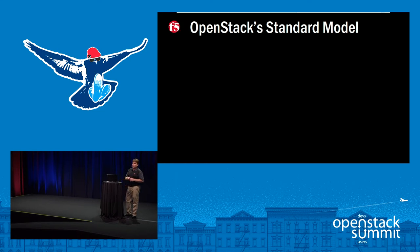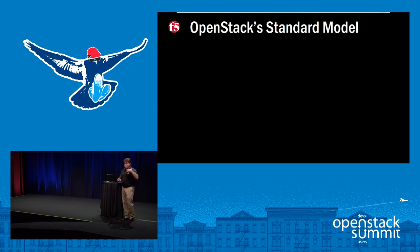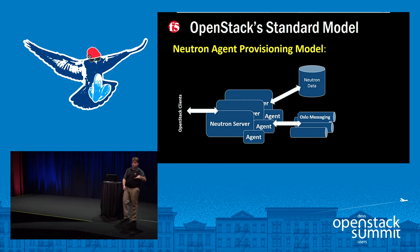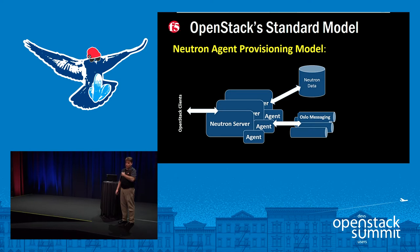If you look at physics, why did the standard model allow physics to continue forward? Because they could build on the theories, they could build on the pieces. Did it hold them back in some way? Yes. OpenStack has a standard model. What does that mean for a vendor like us? When you deploy OpenStack, Neutron has to go along with it. So what do you get day one when you install it? Whether you want it or not, it's there. As a vendor, there's a thousand different ways for us to deploy our services in network virtualization, but this is the model that's there.